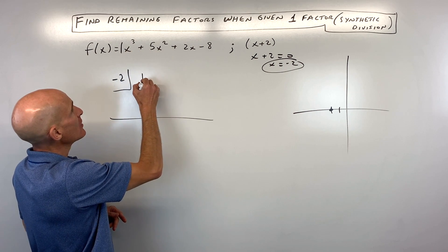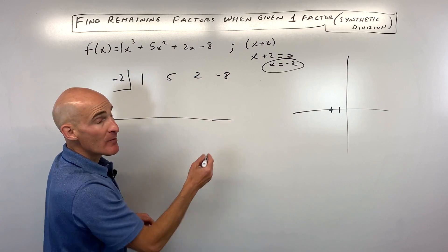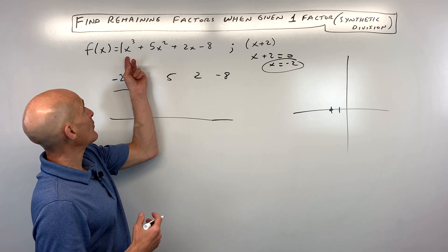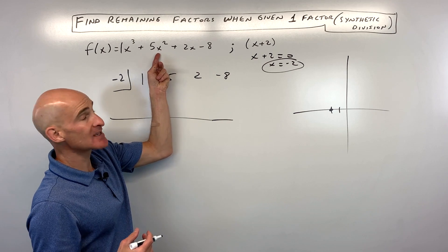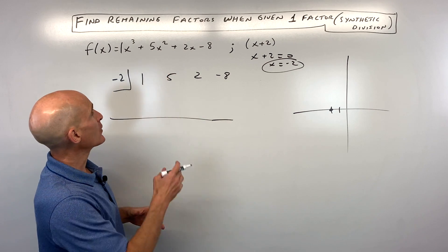So now when we do the synthetic division, we're going to use the coefficients 1x³, 5x², 2x, and -8. Keep in mind, if you're missing any of the terms, like if I went from x³ to x¹ and I skipped over x², I have to put a 0 there as a placeholder. So you want to go in descending order.